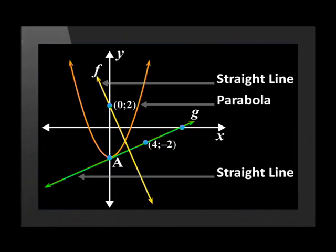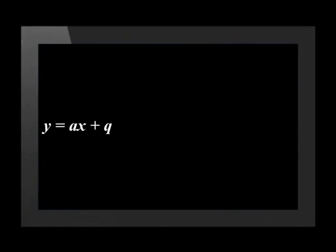Let's see how this works when we apply the method to the problem given earlier. This diagram shows the graphs of two straight lines and a parabola. You should be able to identify the parabola by looking at the shape of the curve. We have to find the equation of g, which represents a straight line. Step 1 is to write out the standard form of the equation of a linear function, which is y equals a times x plus q.